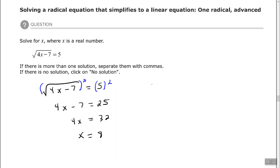Check your solution. 4 times 8 is 32. 32 minus 7 is 25. And the square root of 25 equals 5. Okay so x equals 8 is correct.